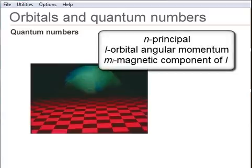L, the orbital angular momentum quantum number, and M, the orbital magnetic quantum number.